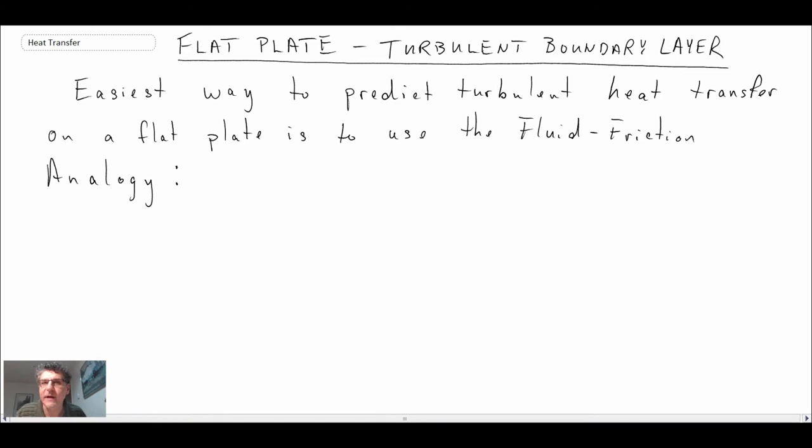So if you recall from the end of the last lecture we talked about a fluid friction analogy or the Colburn analogy. That is the best thing to use if you're trying to determine the convective heat transfer coefficient for a turbulent boundary layer over a flat plate.